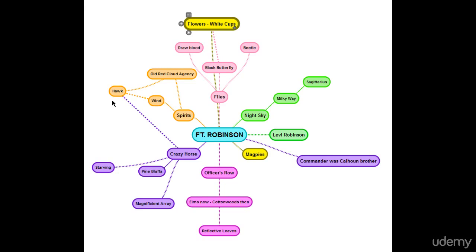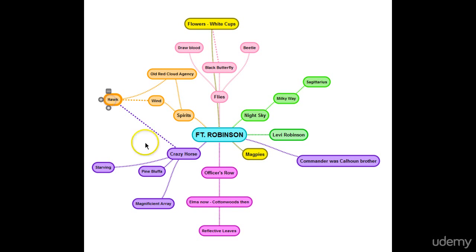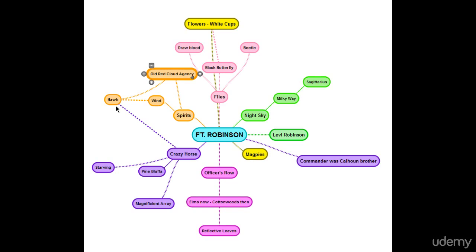So what does this have to do with writing the article? I've got all my senses going — the butterflies, the cottonwood trees, the Milky Way, Crazy Horse. The commander at the time was Calhoun's brother — the brother of one of Custer's officers killed the previous year at Little Bighorn, so clearly there was no love lost between him and Crazy Horse. But looking at all these things, hawk is connected to Crazy Horse, the wind, the spirits, and the Old Red Cloud Agency. Of all the items on this mind map, hawk has the most connections — it's the most interconnected. So as I'm struggling with how to start this article, I realize the hawk is going to be the key that flies me into the piece.